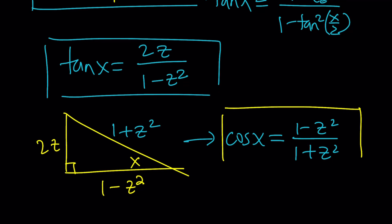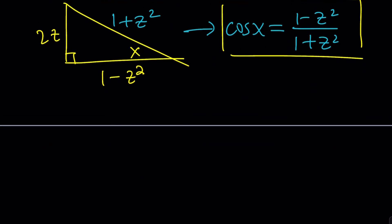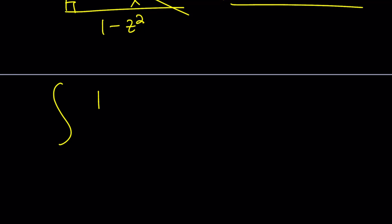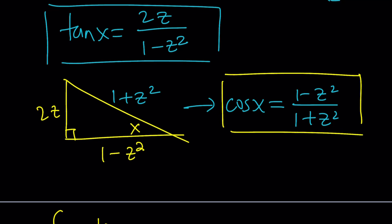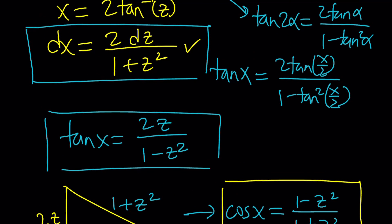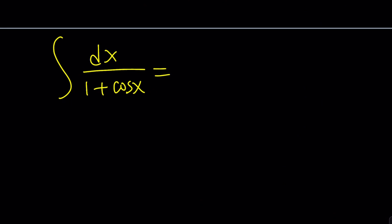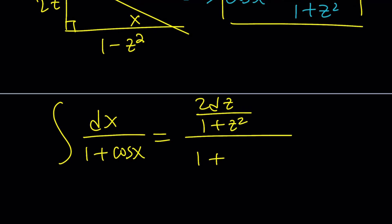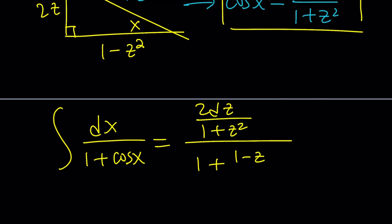Now let's go ahead and use all of these things to simplify dx over 1 plus cosine x. We're going to replace dx with 2 dz over 1 plus z squared. And 1 plus cosine, cosine is going to be replaced with 1 minus z squared over 1 plus z squared. And we're just going to integrate this.